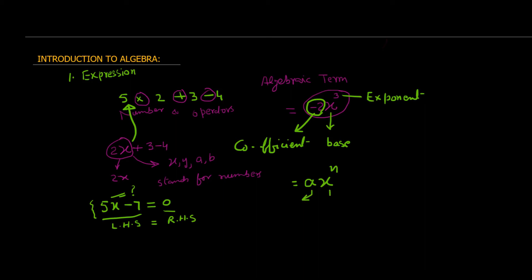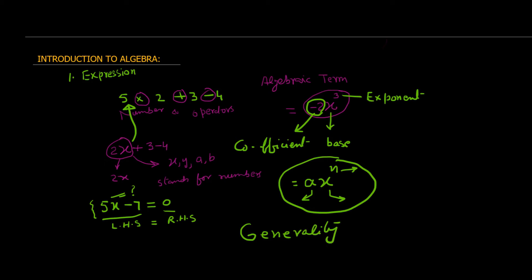Where A is a number, X is a variable, and N is a number. When we write something in this form — A times X raised to the power N — we are trying to generalize things. This is generality. We are trying to generalize things, and this is the way we solve problems in algebra. We try to generalize things and then achieve an abstract, more general solution to a problem.